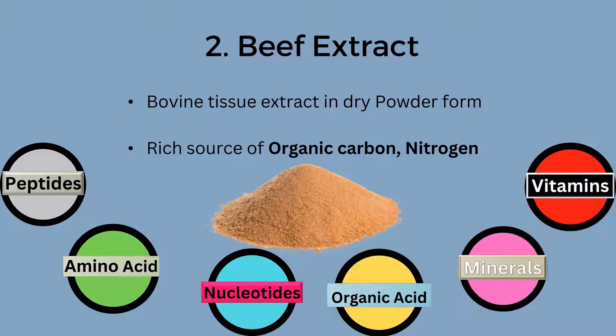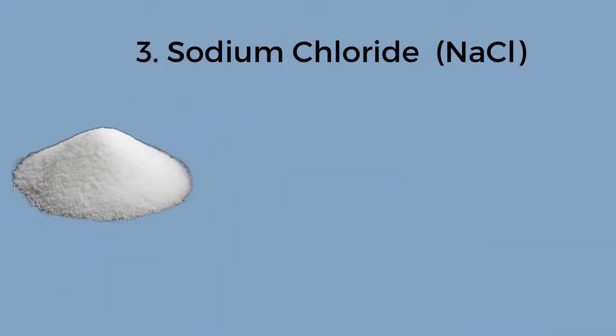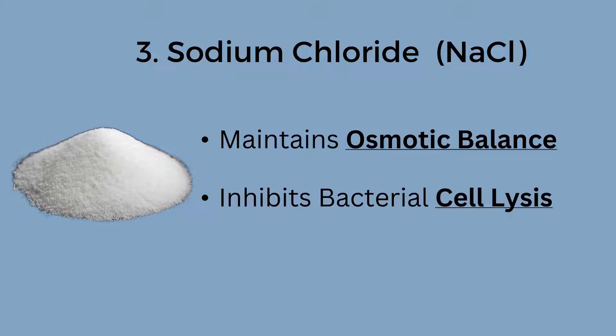The third ingredient in the nutrient broth is sodium chloride. The main role of sodium chloride is to maintain osmotic equilibrium. By maintaining osmotic balance, NaCl prevents bacterial cell lysis. Therefore, sodium chloride is very essential in the nutrient broth.